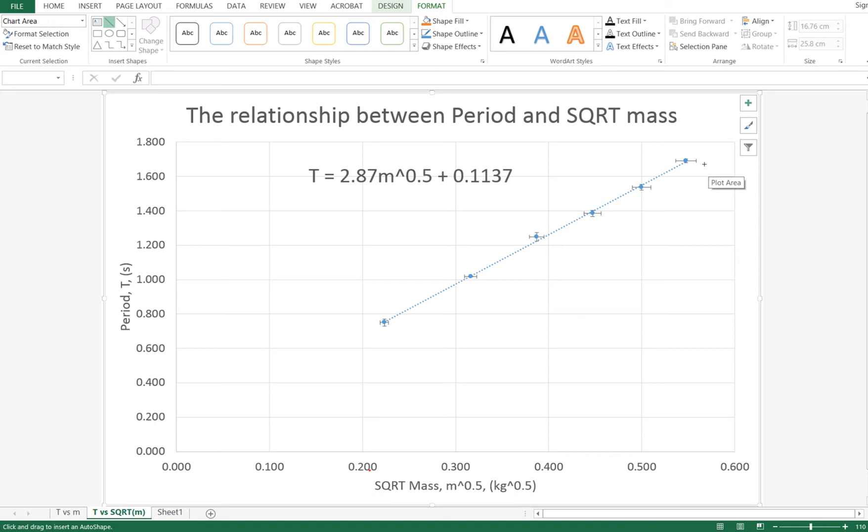Now generally what you want to do is you want to have a line of worst fit that represents the worst possible gradient that you could have based on your error bars. So your line of worst fit has to touch or go through all of the error bars from one extreme to the other. I'm going to start over here and bring it back. I'm going to go through the y-intercept so we can calculate later what the y-intercept is.